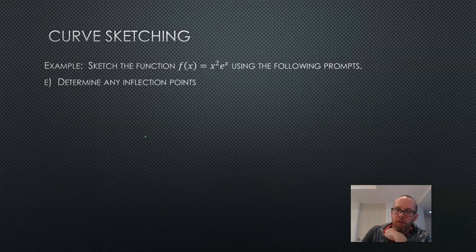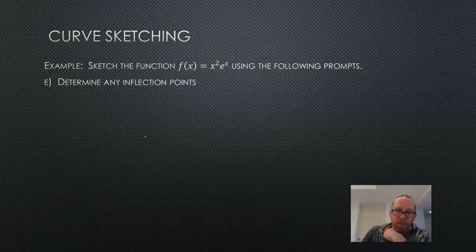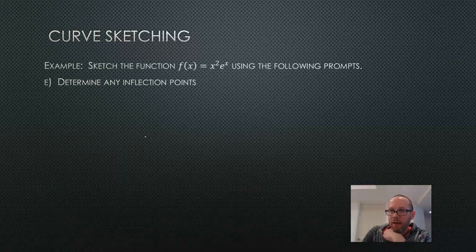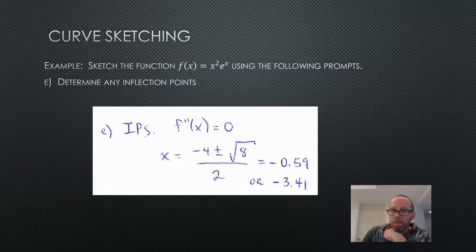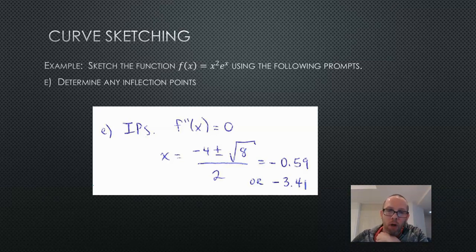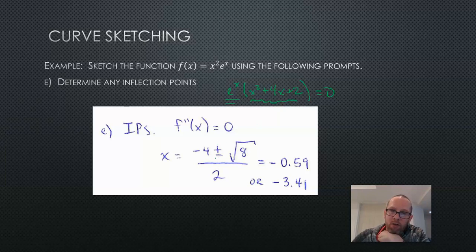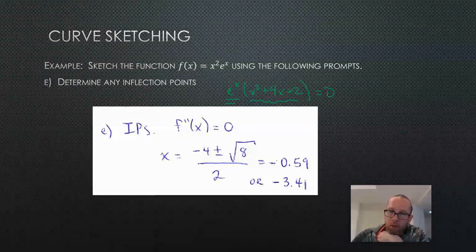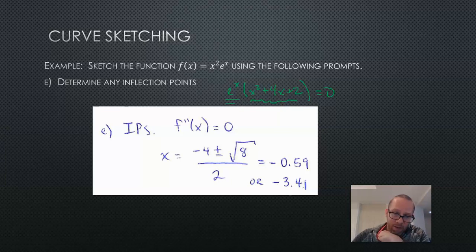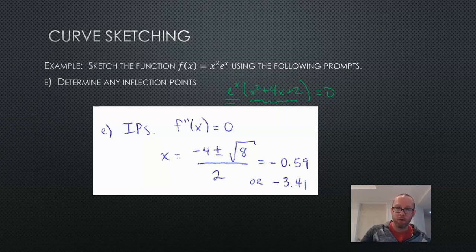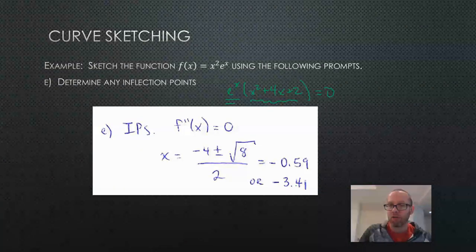For inflection points, set the second derivative to 0. Since eˣ is never 0, we just solve the quadratic x² plus 4x plus 2 equals 0 using the quadratic formula. We get two solutions: approximately negative 0.59, which is between our local max and min as expected, and approximately negative 3.41. You can use your calculator to get the decimal y values for those two inflection points.